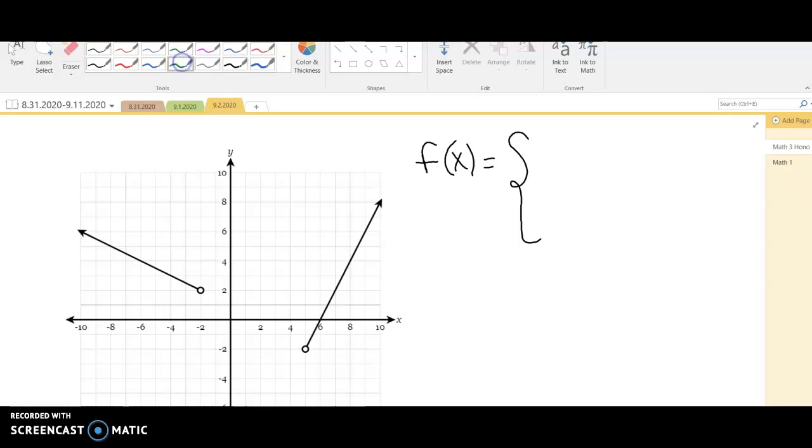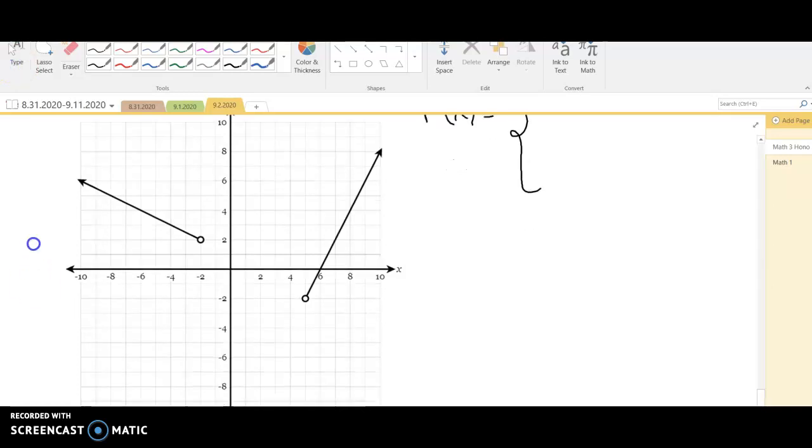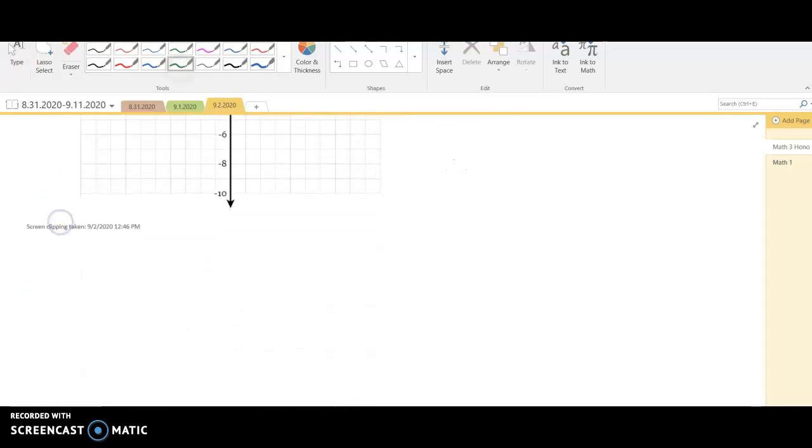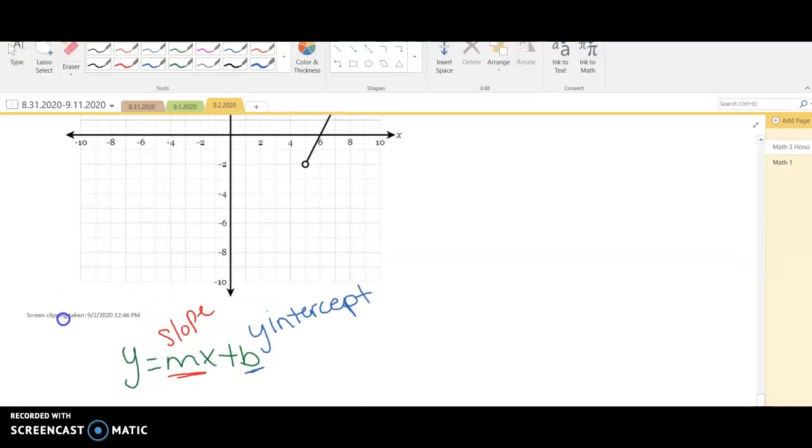So we have to find the equation of this line. The equation of a line is y = mx + b. So we need to be able to find either the slope, m is our slope, or we also need to be able to find our b which is the y-intercept. So let's go ahead and look at my line.